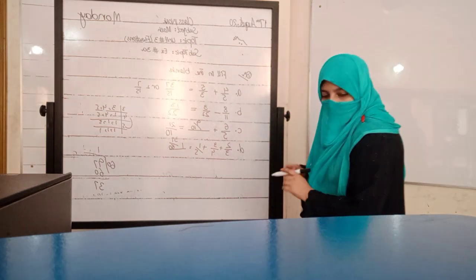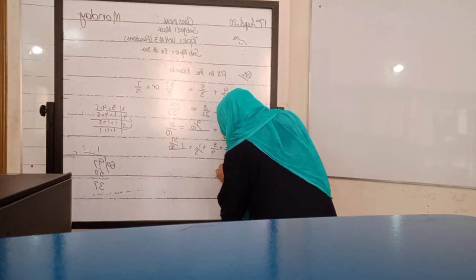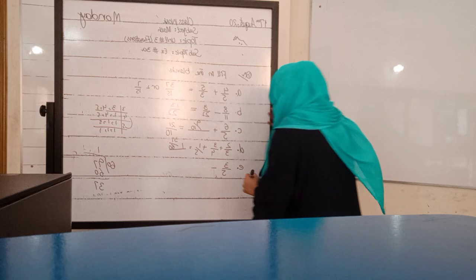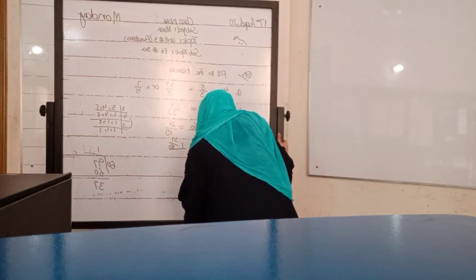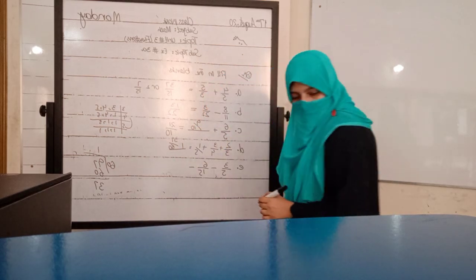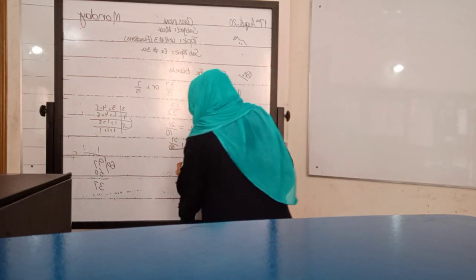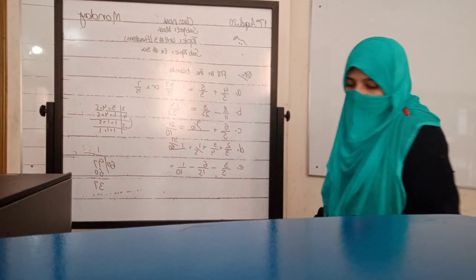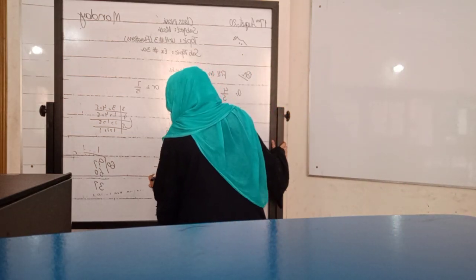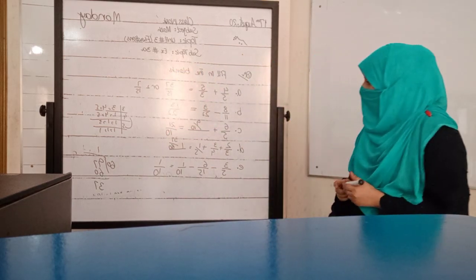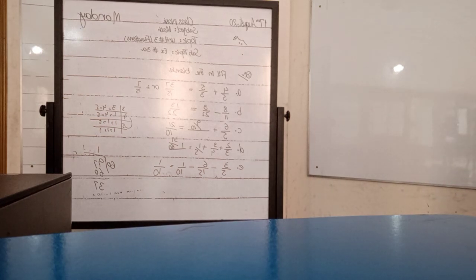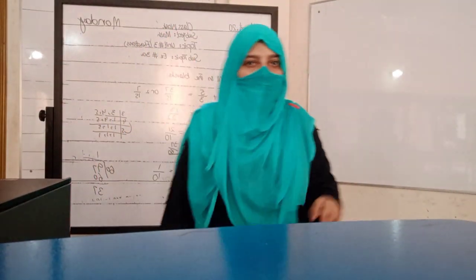Now last one: 3 by 5 minus blank by 15 minus 1 by 10. Answer is 1 over 10. Okay, now answer this question.